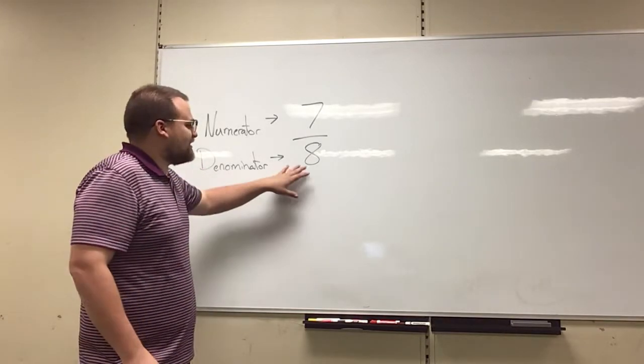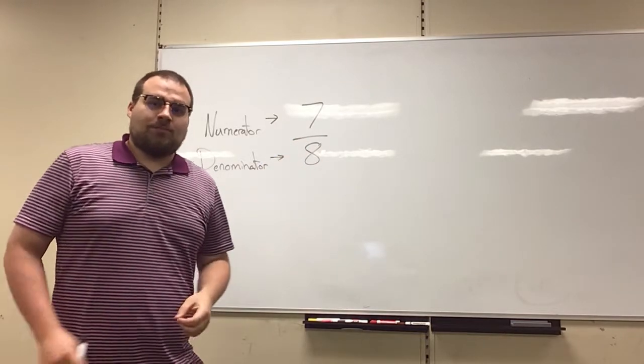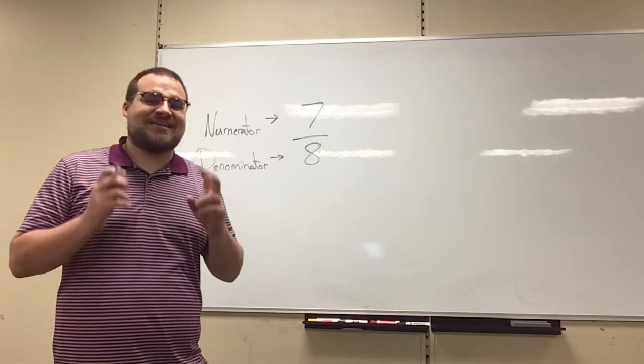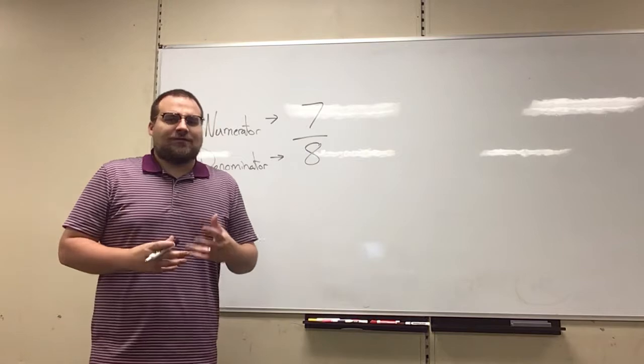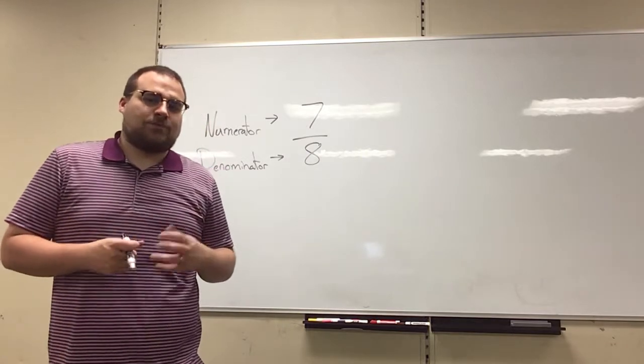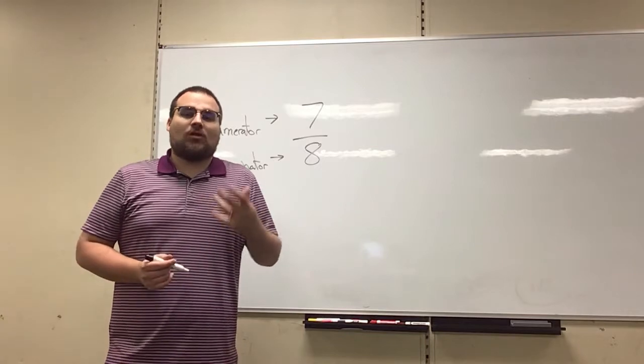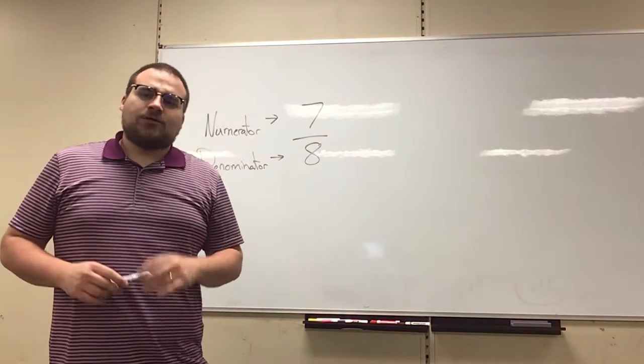Now, a fraction like this is what we call in simplest form, meaning that it can't be written any easier, quote unquote, than it is. A lot of times a good way to think about simplest form is actually having your fraction written with the smallest numbers possible in the numerator and denominator.